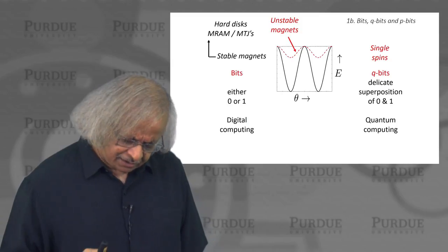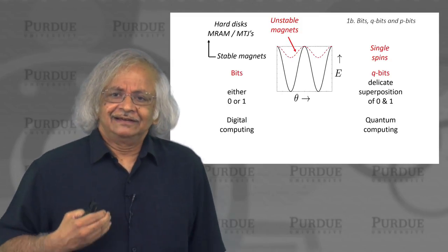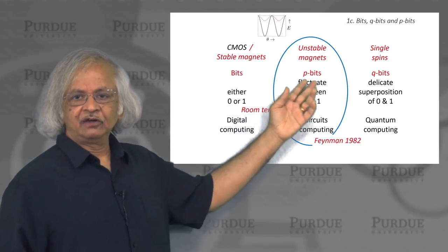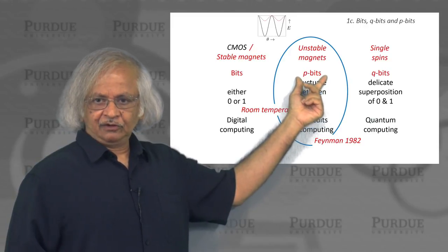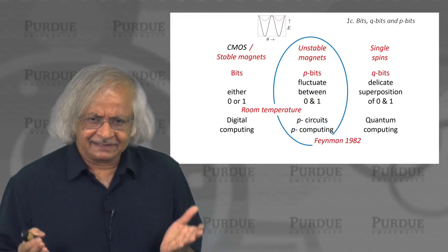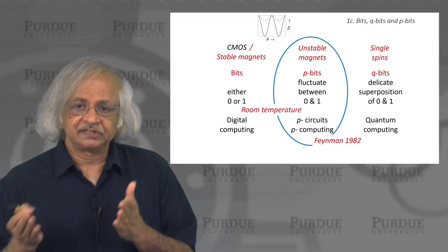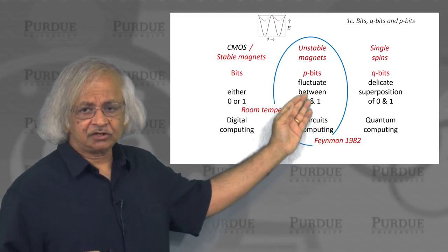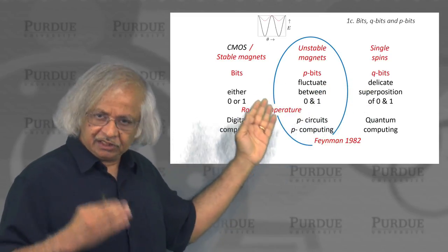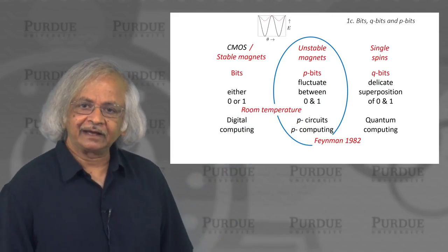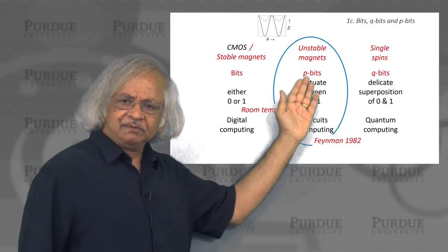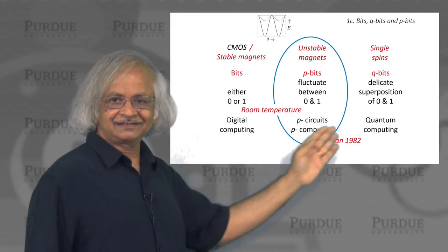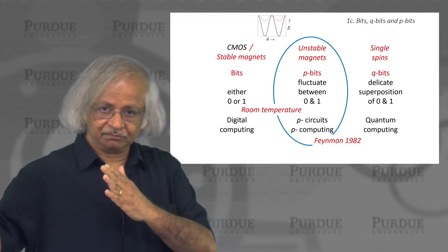This is a well-known problem with nanomagnets. What we have been arguing is that this is really an opportunity because these unstable magnets provide a very natural physical representation for what we call p-bits. They're very classical things, nothing quantum about it. It just fluctuates back and forth between the zero state and the one state. They're not superpositions like the qubits, they're either zero or one. It's just that they fluctuate back and forth between them. P-bits represent something intermediate between the stable bits of digital electronics and the qubits of quantum computing.